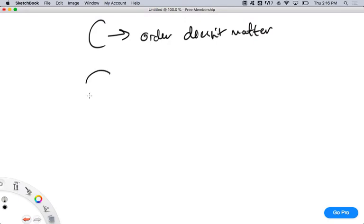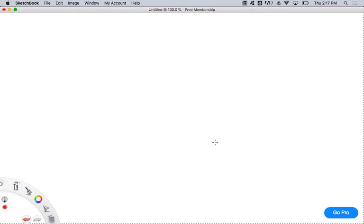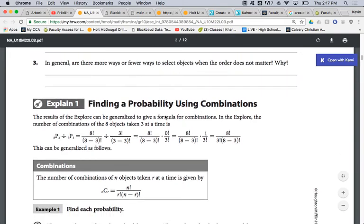Now the formula for combinations, N-C-R, is N factorial over R factorial times N minus R factorial. The only difference between permutations is that permutations doesn't have that R factorial there. On the test, you will be expected to know that, but not to use it. You're just going to be using your calculator. Let's go through the early examples of combinations.